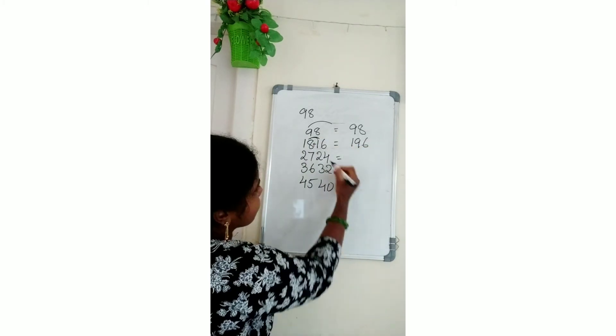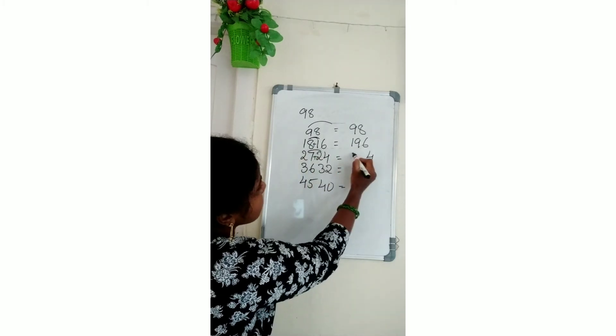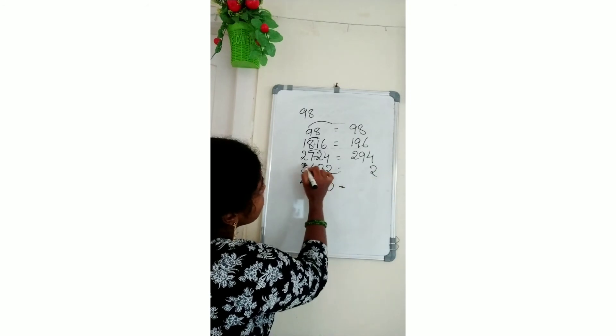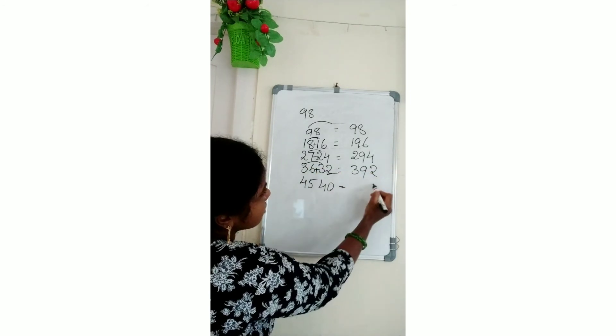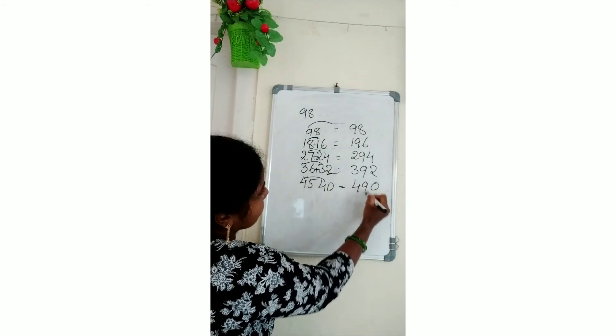Last 6, write as it is. Here, this 4, also write as it is. 27 plus 2 is 29. Write this 2 as it is. 36 plus 3 is 39. Write this 0 as it is. 45 plus 4 is 49. That's all.